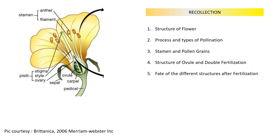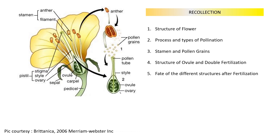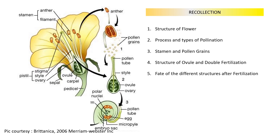Welcome to Jewology, a channel dedicated to making concepts in biology simple, easy to understand and interesting. In this series, we have been studying the structure of flower. We have also seen the process and the types of pollination. And in the previous videos, we have also seen about the microspores or the pollen grains, and how the male nuclei are being produced. In this video, we are going to look at the structure of ovule and what is double fertilization — that is, how does fertilization happen in case of these plants?